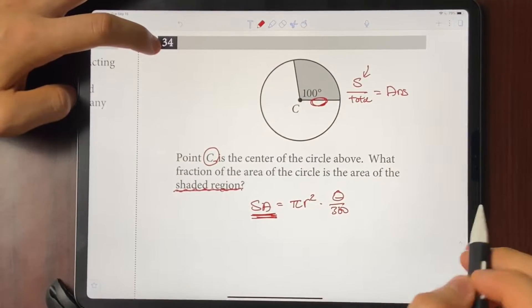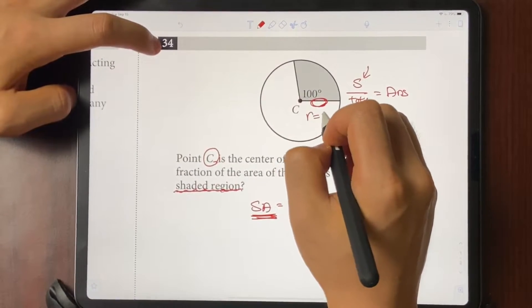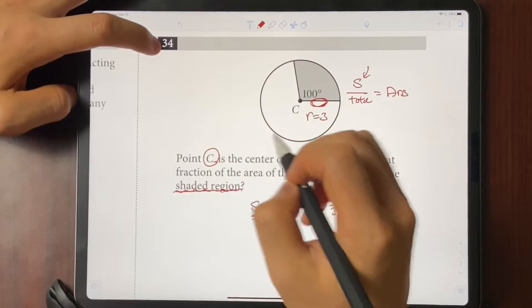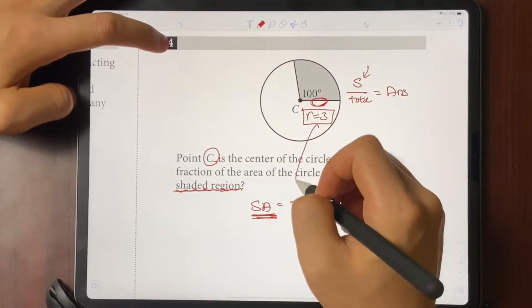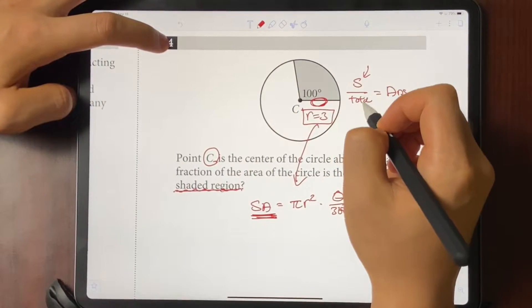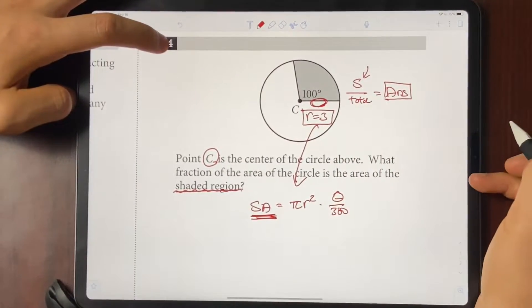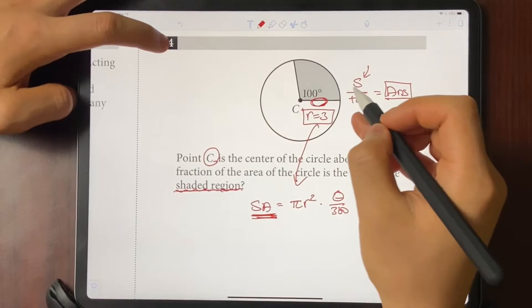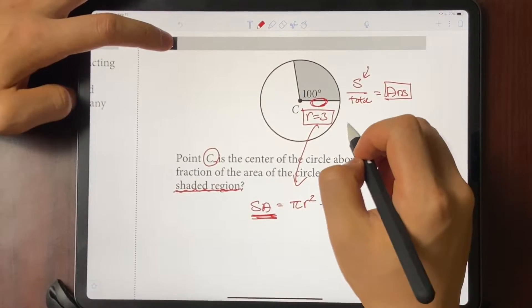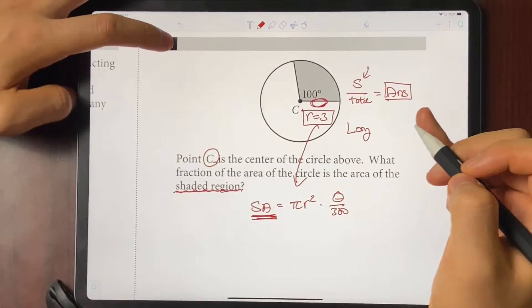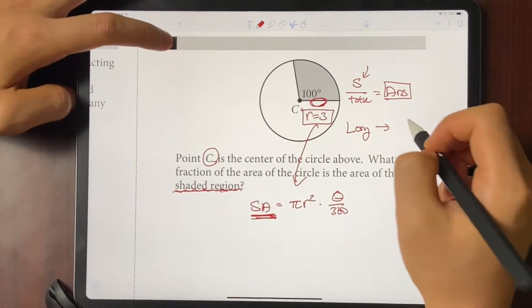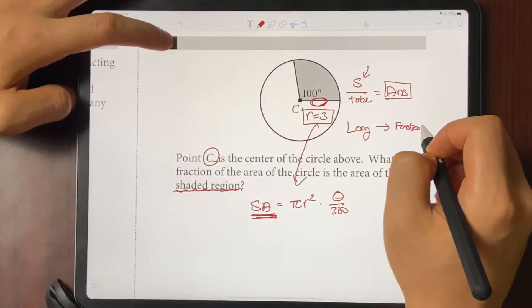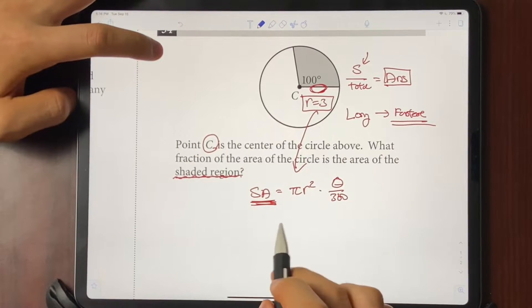But what some bright students would try is they're going to plug in a radius on their own. If radius is the issue, I'll come up with my own radius. They would come up with the radius, plug it into the formula, find out the sector, find the total, and find out the fraction of the shaded region. This method works. It's just that it takes you a very long time. It's like a slow method. And when you're under time pressure, you want to go for the fastest possible method. So how can you use the faster method?